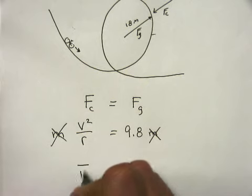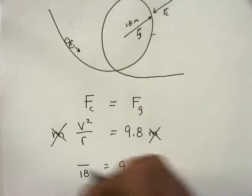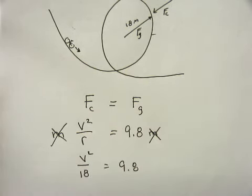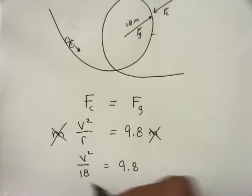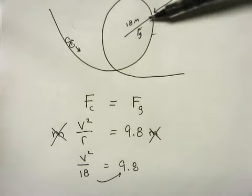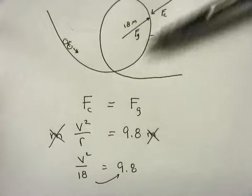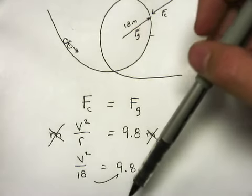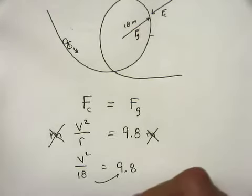So the radius is 18 and 9.8 v squared. So it turns out that you just multiply this over that. When you do a loop-de-loop, it only depends on how big the circle is. So in this case, the answer is going to be 13 meters per second.